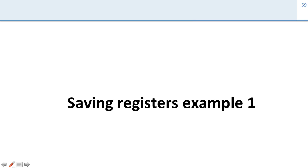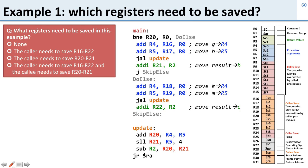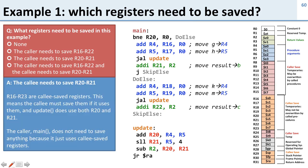Now let's walk through an example of saving some registers. Before we do that, let's ask the question: what registers need to be saved in this example code that we had before? We can take a look at this and determine that the callee needs to save registers 20 and 21. Let's walk through all the registers that are used here and figure out what we need to do.